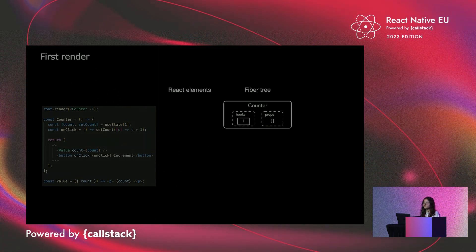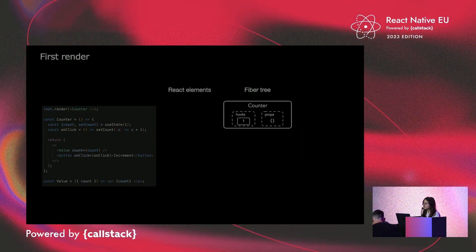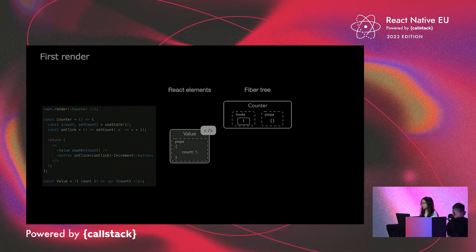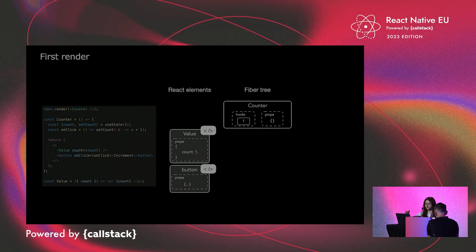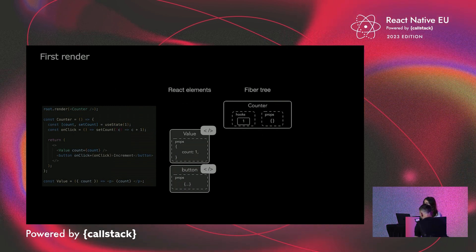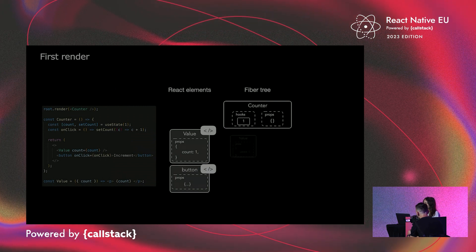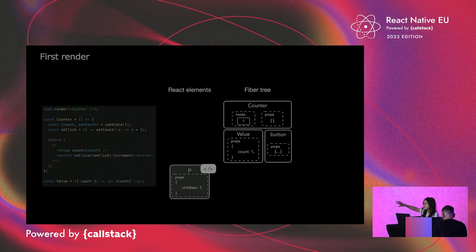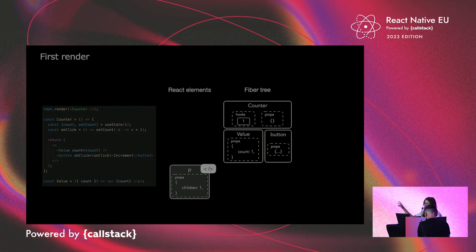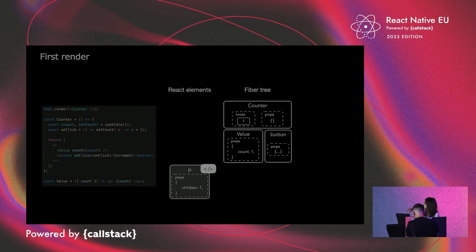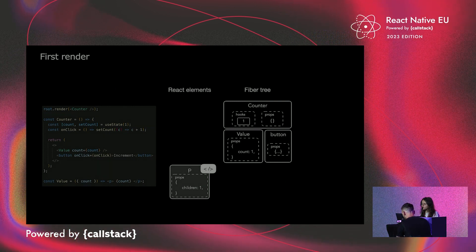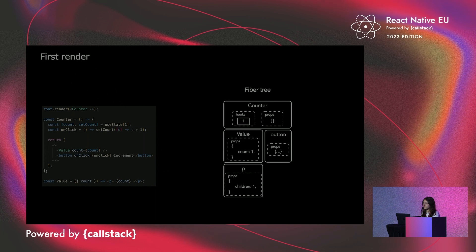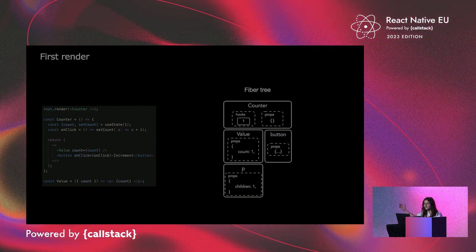Then we go through the JSX, creating new React elements for value — which takes a count prop of 1 — and for button. Counter returns these two React elements. React takes them and creates their fibers for value and button. Then we move on to value, execute it, and pass it the prop values stored inside the fiber: count equal to 1. We execute this function and create the paragraph React element, and from it React creates the paragraph fiber. Here is our first fiber tree.